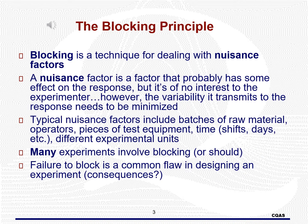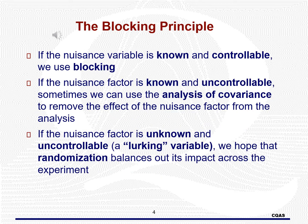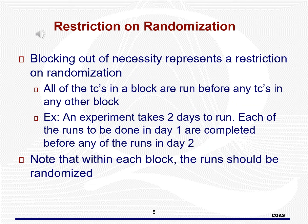A factor that could add unwanted variation to the results of an experiment is considered a nuisance variable. A block factor is a nuisance factor that we know about and can't control. If we are not able to control the variable, then it is considered a covariate. If the nuisance variable is unknown and uncontrollable, then we hope that randomization will balance out its impact on the response.